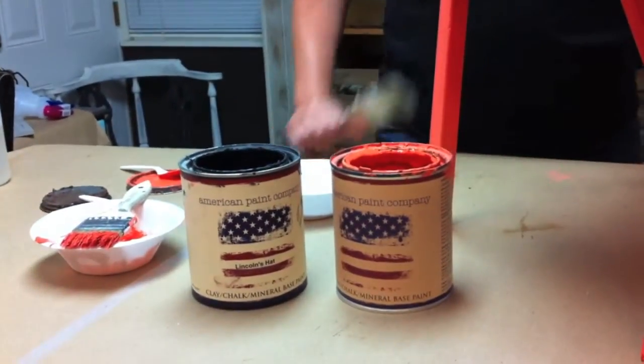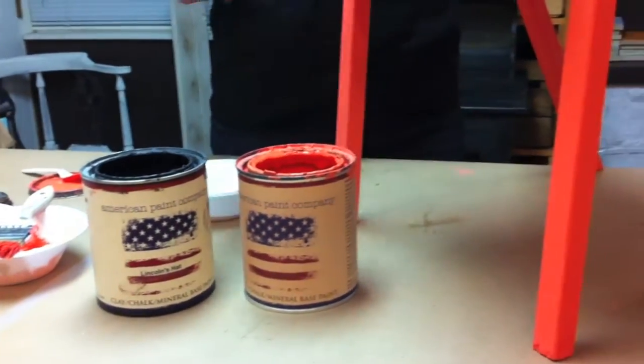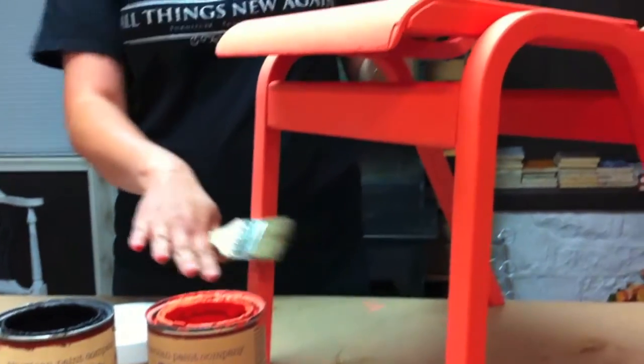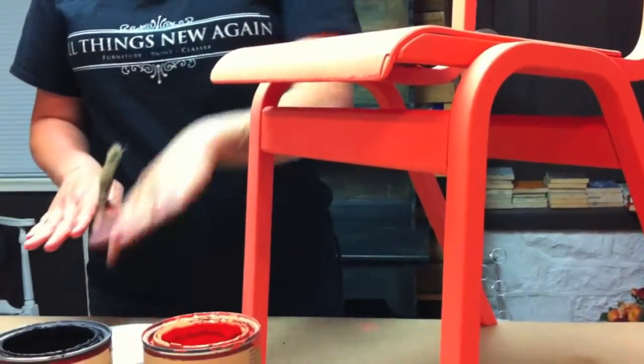I've already painted most of the chair with a really pretty color called Coral Reef, and now I'm going to use a black color called Lincoln's Hat to do the chalkboard part.